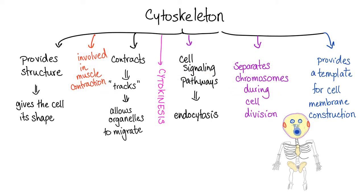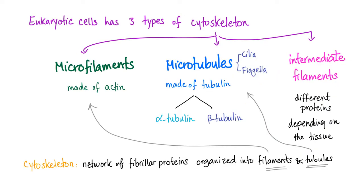It segregates chromosomes during cell division and provides a template for cell membrane construction. Eukaryotic cells have three types of cytoskeleton: microfilaments, microtubules, and intermediate filaments. Microfilaments are made of actin. Microtubules have tubulin — two types, alpha and beta. Microtubules will form cilia, flagella, and centrioles. Intermediate filaments are of different types depending on the specific tissue. That's why the definition of cytoskeleton is a network of fibrillar proteins organized into filaments and tubules.